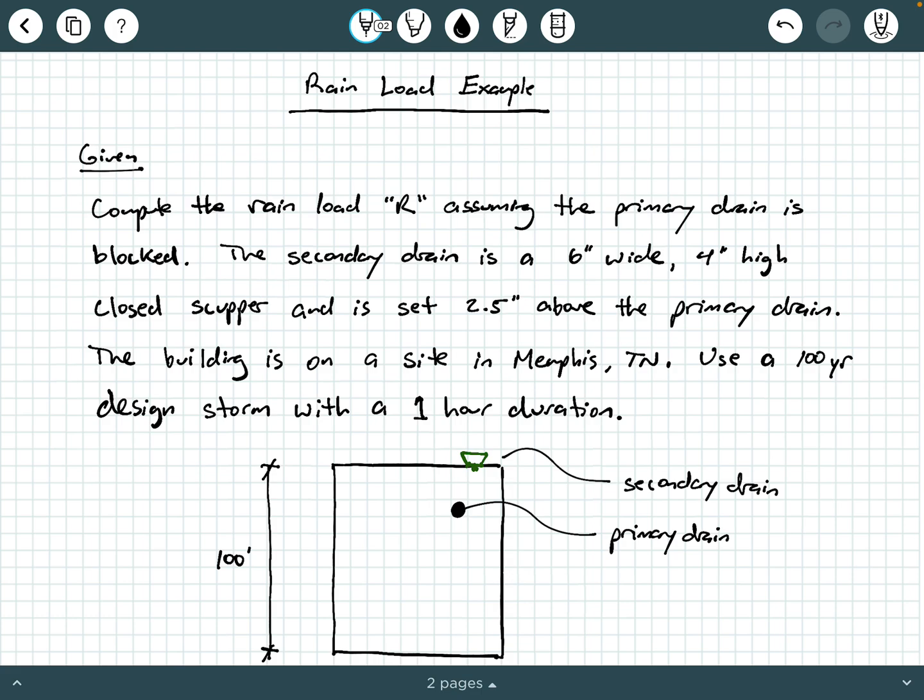So let's look at our given information. We are being told to compute the rain load R assuming the primary drain is blocked. The secondary drain is a 6-inch wide, 4-inch high closed scupper and is set 2.5 inches above the primary drain. The building is on a site in Memphis, Tennessee, and we are told to use a 100-year design storm with a one-hour duration.